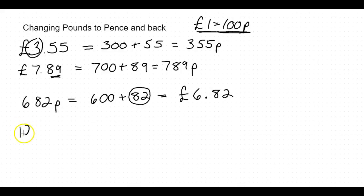Let's try another one: 1249p. This is a bit harder but it's still the same idea. How many sets of 100 do we have? Well in this case we've got 12 sets of 100, because we've got 1200.